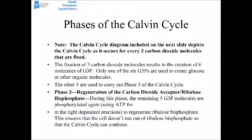The Calvin cycle diagram shows what happens for every three CO2 molecules that are fixed. Phase 3 is regeneration of the CO2 acceptor, ribulose bisphosphate. Five of the six G3P molecules made during one cycle are not used to make glucose — instead, those five G3Ps are used to remake the ribulose bisphosphate. Each turn of the Calvin cycle forms six G3P molecules; only one is taken out to make glucose, and five are used to regenerate the CO2 acceptor and keep the cycle going.